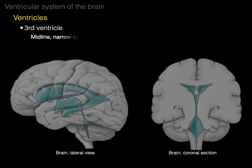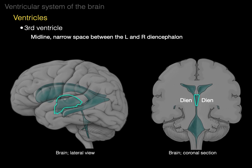The third ventricle is in the midline — it's a narrow space between the left diencephalon and the right diencephalon. In the coronal section, there's one diencephalon, there's the other diencephalon, and there is our third ventricle. In the lateral view, the thalamus and hypothalamus are on either side. The third ventricle is what is in between the thalamus and hypothalamus on the right and those structures on the left. The thalamus, hypothalamus, and epithalamus together are called the diencephalon — the inner brain.